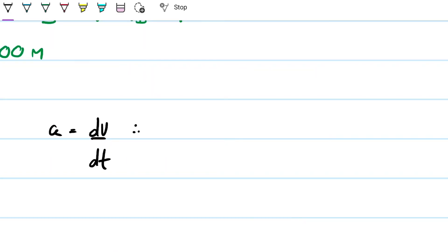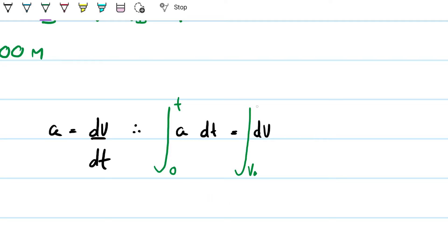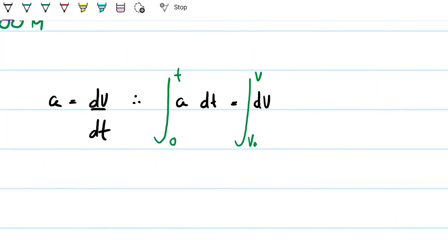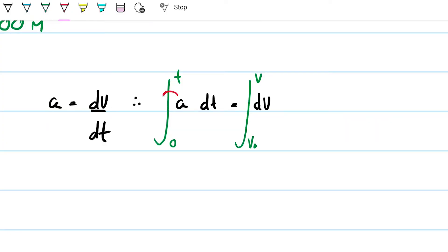We're going to integrate the acceleration relationship. We integrate from time zero — when the plane starts to move — to a time t, and from v₀ to v. Because the acceleration a is constant, it comes out of the integral. What comes out is: a·t = v − v₀. This is a simple yet powerful equation we can use whenever acceleration is constant.